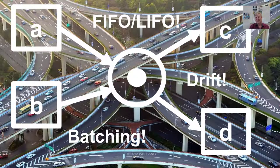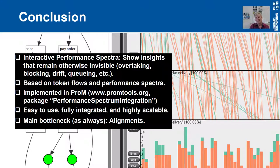I hope that this illustrated the capabilities of the tool. The main point is that you cannot see behavior by just looking at averages, standard deviations, and these types of aggregate statistics. You really need to look at the individual behaviors of tokens in places to really understand phenomena like queuing, partial blocking, concept drift, etc. I hope that you are interested in this tool and would like to use it. It has been fully implemented in PROM.